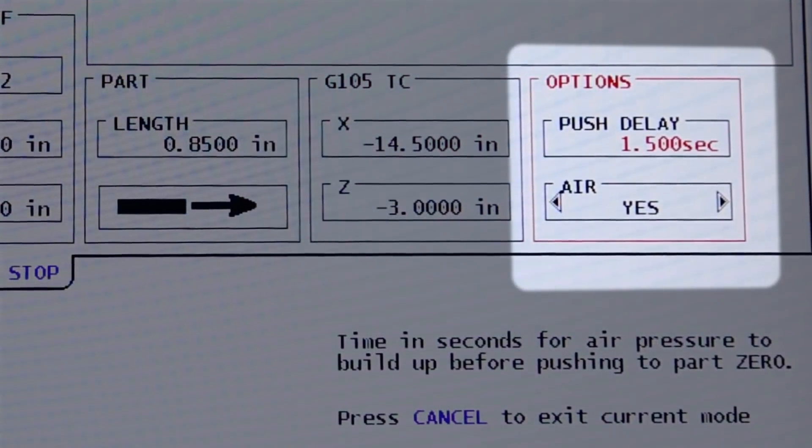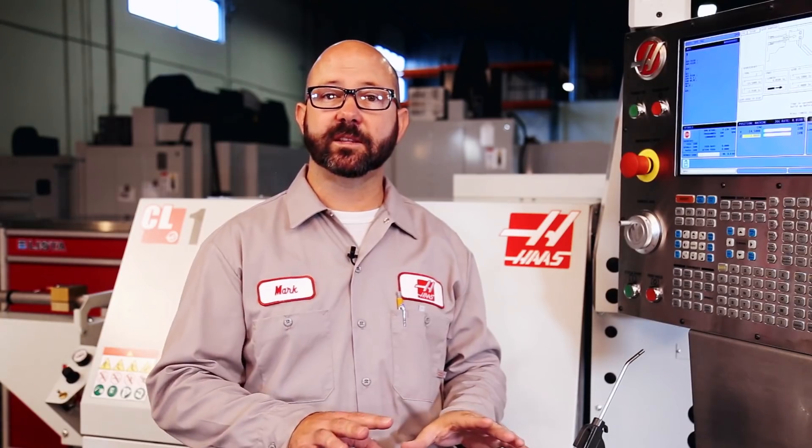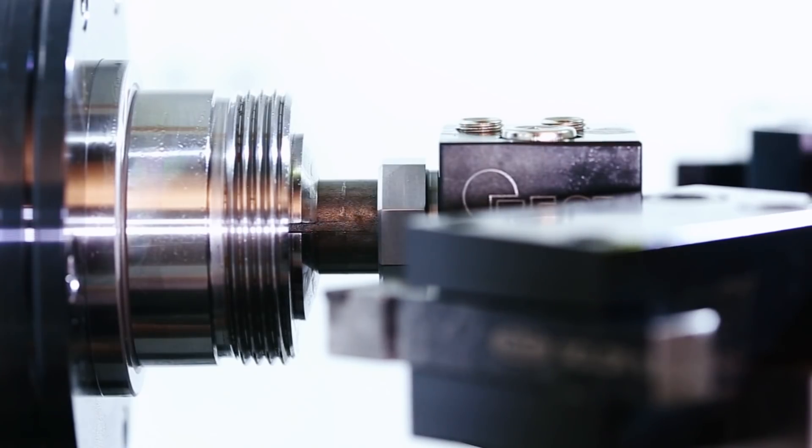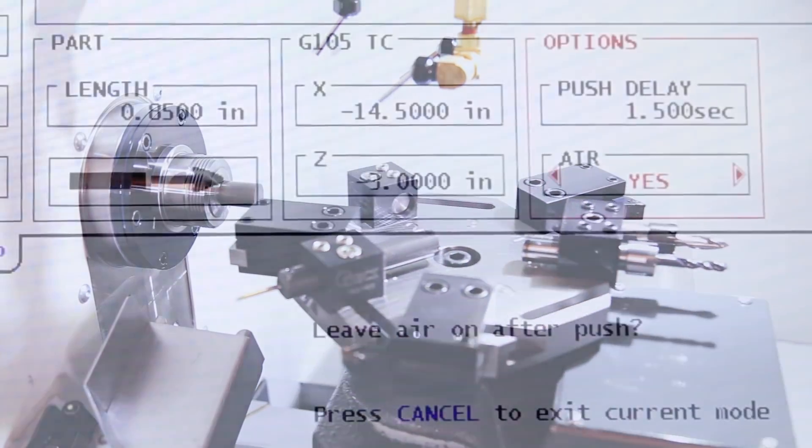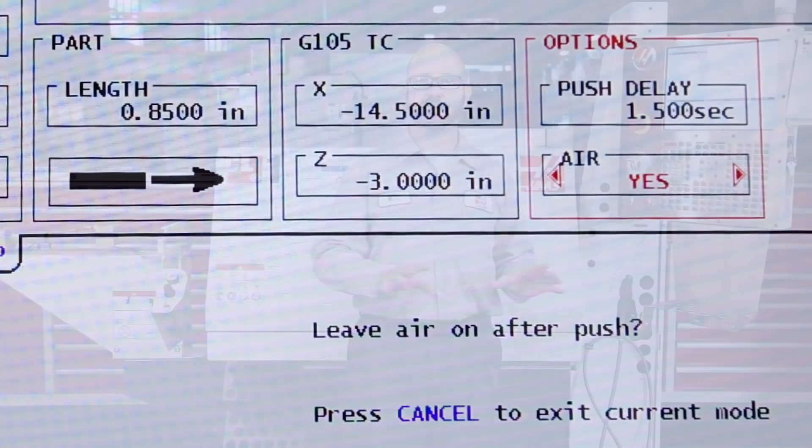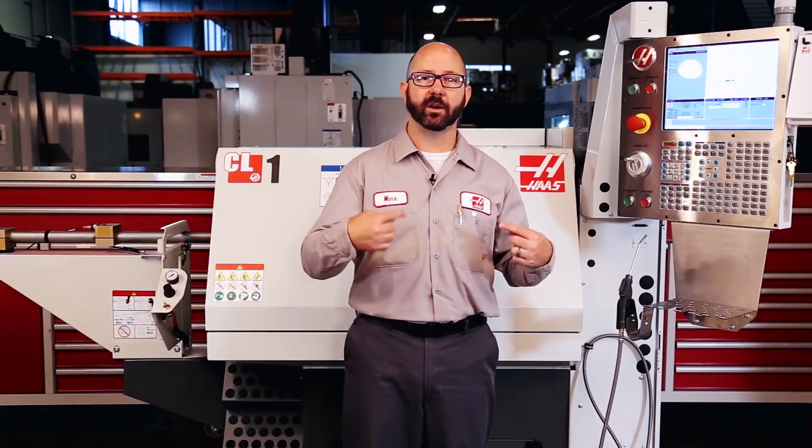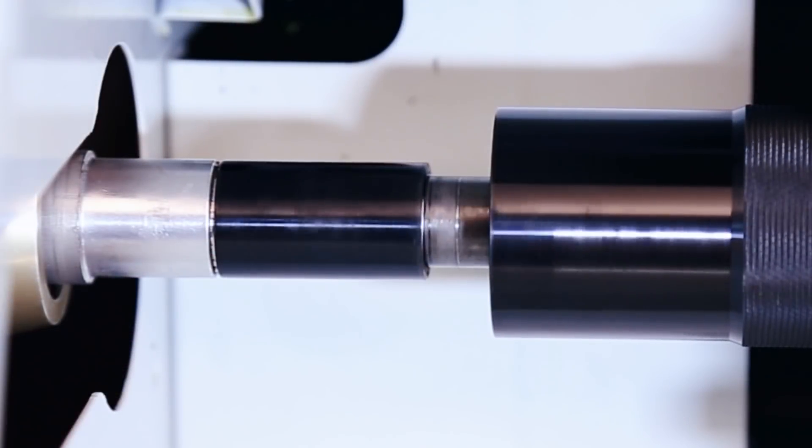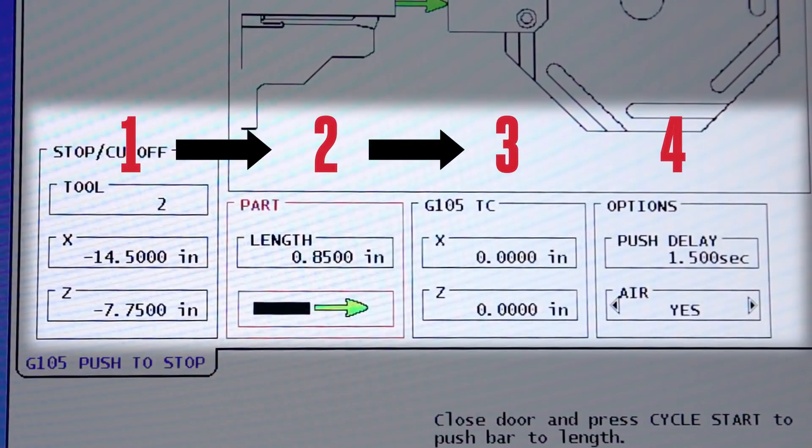On to column four, our final column. Now this first input field here says push delay. And we're going to set that to 1.5 seconds. That's a good amount of time. That's the time the control is going to wait, allowing for the bar to be pushed up against that stop. Our final question here says air. And we're going to set this to yes. This means that the air is going to be on to the bar pusher while parts are being run. And that's going to force our push rod up against the tail end of our stock. Allowing our 60 degree conical center to both support and center our stock. So we've filled in all four columns. One, two, three, four.